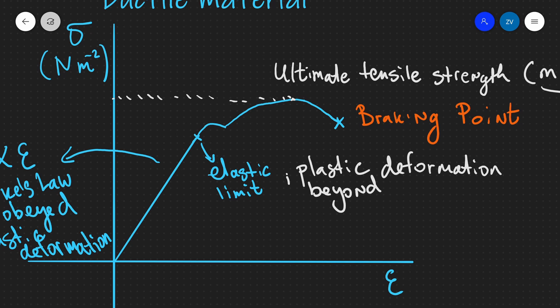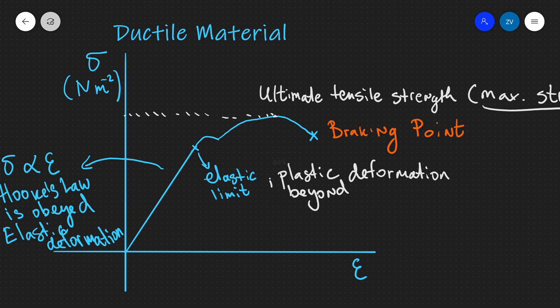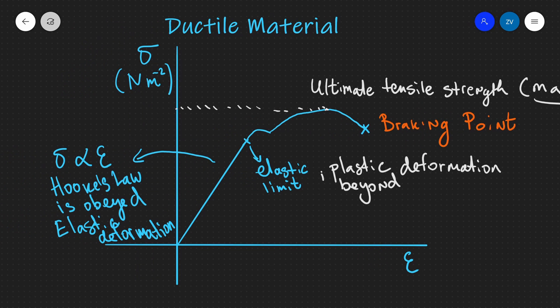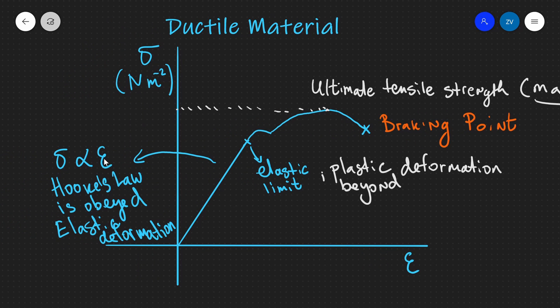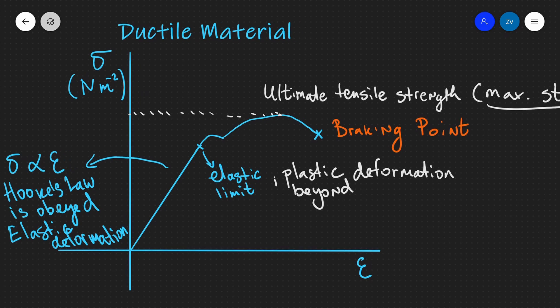To summarize the ductile material graph: in the first region, stress is proportional to strain, force is proportional to extension, Hooke's law is obeyed, and we have elastic deformation where the material returns to its original shape.